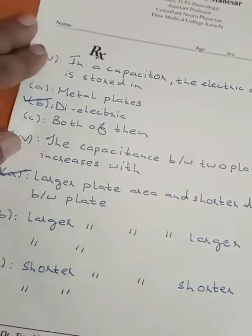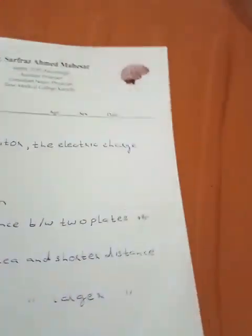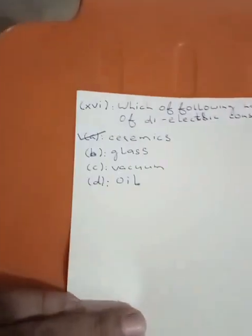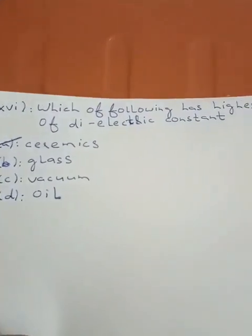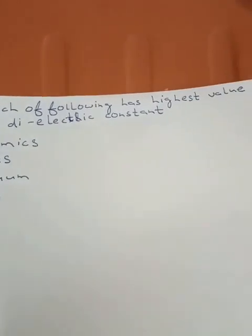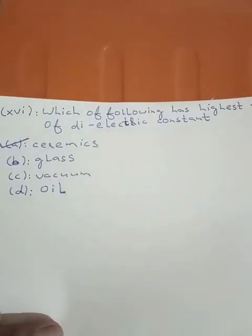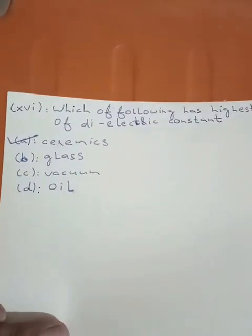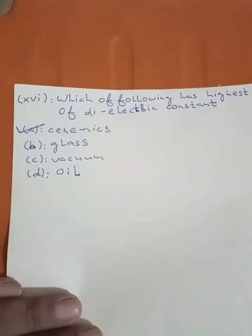The capacitance between two plates increases with large plate area and shorter distance between plates — of course, the more you increase area and shorten the distance, the more capacitance increases. Which of the following has the highest value of dielectric constant? Ceramics has the highest value among all the given options.